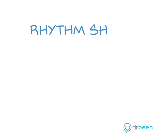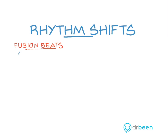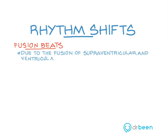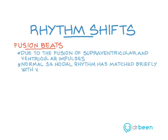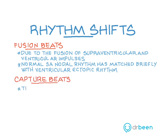A couple of important rhythm shifts to remember. Fusion beats are beats occurring due to the fusion of supraventricular and ventricular impulses — the normal SA nodal rhythm has matched briefly with the ventricular ectopic rhythm, and we say the two rhythms have fused. Capture beats are produced due to the transient capturing of ventricles by the SA node in the middle of an AIVR.